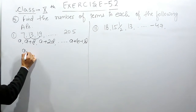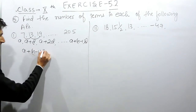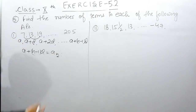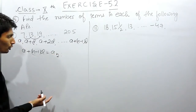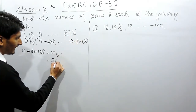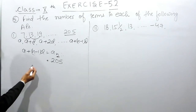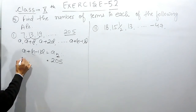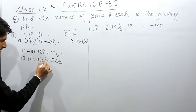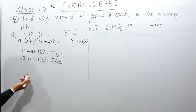The last term is considered as AN, where the Nth term is not known to us. In this case, the Nth term is given to us but the number of terms is not given to us. You can use this formula to find out the answer.